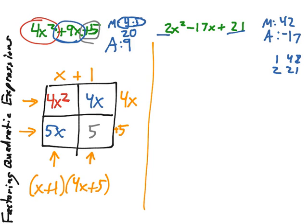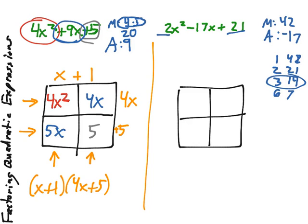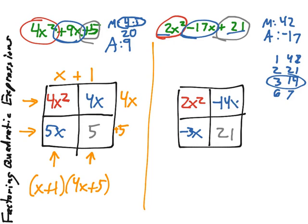2 and 21, 3 and 14, 6 and 7. So, as we go through, the ones that we need that add up to 17 are 3 and 14. So, using our box, we will take 2x squared and place it in the first position. We will take the 21 and place it in the last position. And then, we will split the negative 17x by its pieces, which was negative 3x and negative 14x.